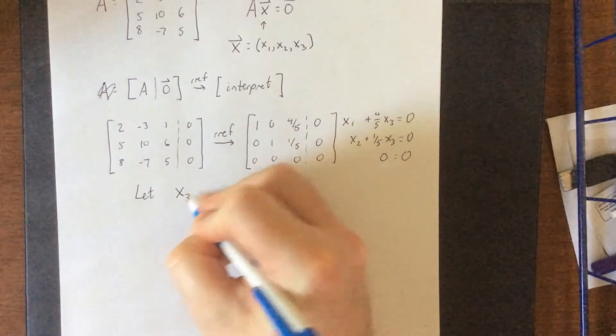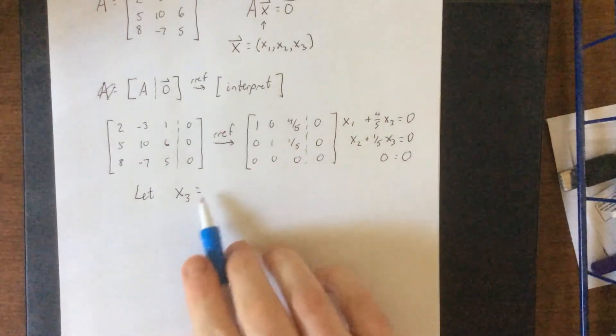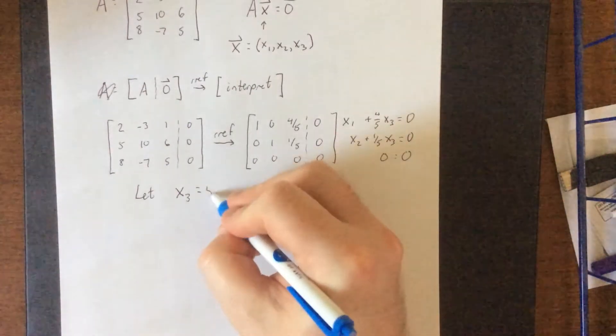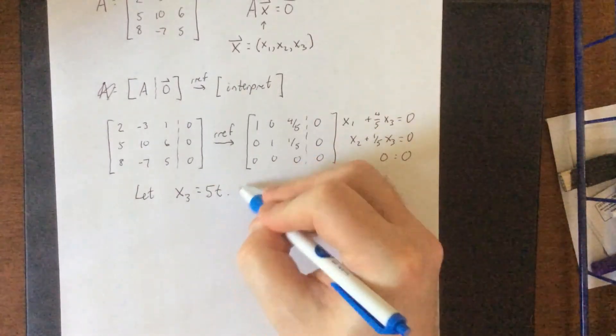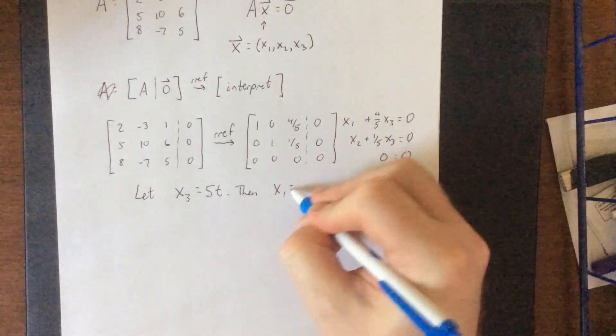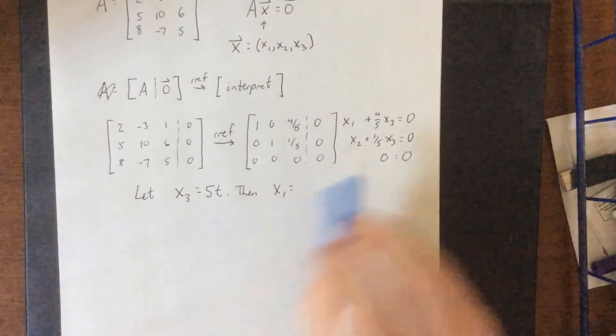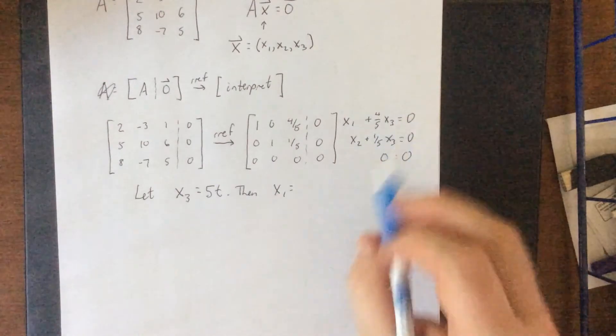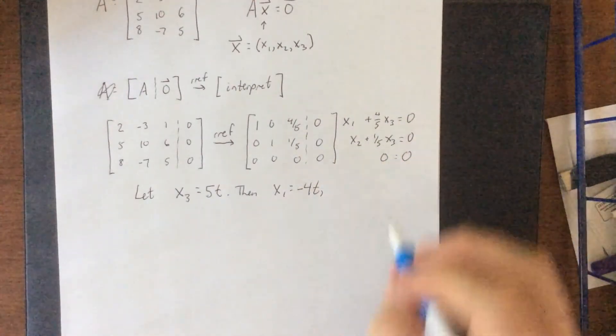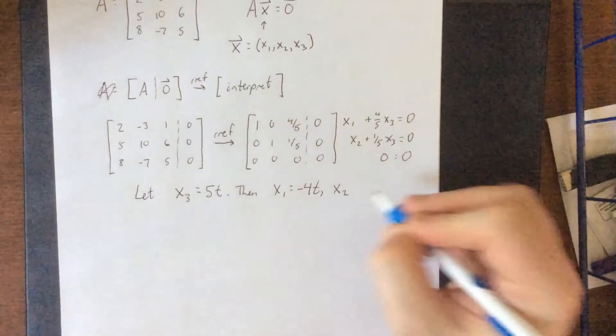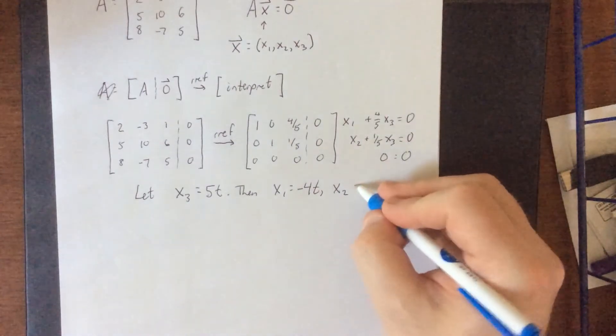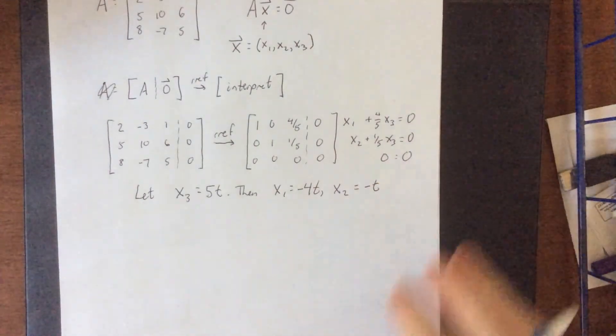So we'll define x3 to be our free variable. Normally we could just say let's call it t. I'm actually going to refer to it as 5t so that we can clear out some of these fractions. Then what we get for x1, we would multiply by 5t to get plus 4t, subtract it over to the other side, we would get x1 is equal to negative 4t. And from the second equation, multiply 5t times one-fifth, we get just t, subtract that t over to the other side, we get that x2 is equal to negative t.